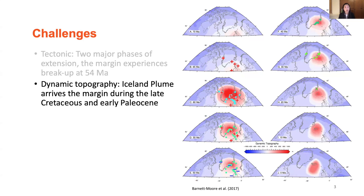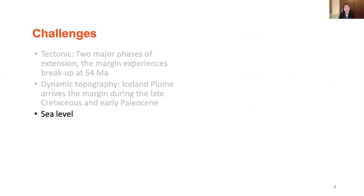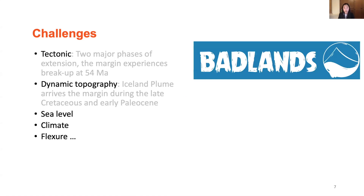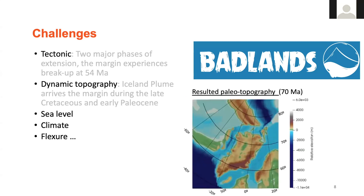Tectonic and dynamic topography have definitely complicated the system, but there are other factors that cannot be neglected, including sea level fluctuation, climate, and flexure. In order to gain a comprehensive understanding of the region, we incorporate all these factors into the basin model and test major controls through time. The initial topography is generated by parallel flow, which Claire introduced earlier, and then forward models are run to test the role of each parameter.